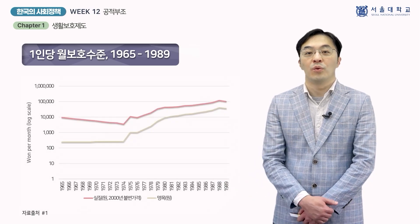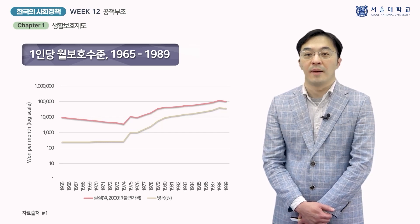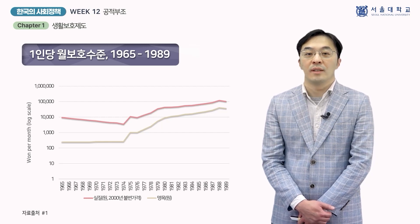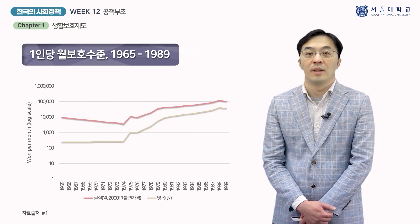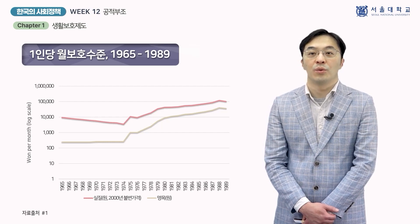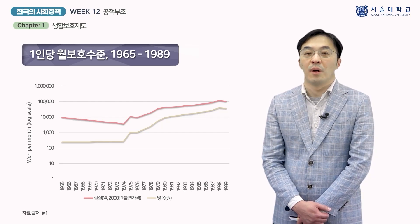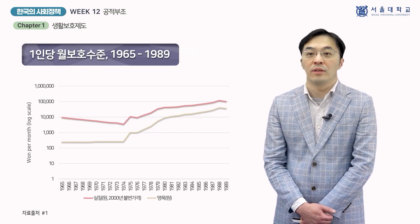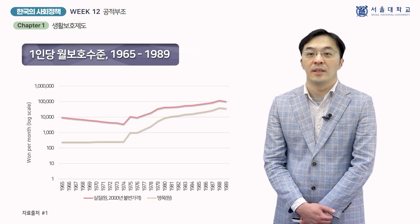그림은 1965년부터 1989년까지 생활보호 대상자의 1인당 월 보호 수준을 나타냅니다. 세로축은 로그 변환한 것이기 때문에 곡선의 기울기는 증가율을 의미하는 것으로 해석할 수 있습니다. 세로축 라벨은 명목은 원, 실질은 2020년 가격으로 조정한 원을 의미합니다. 점선을 보면 명목급여가 1965년부터 1974년까지 거의 고정되어 있었습니다. 하지만 1970년대는 스태그플레이션의 시기이므로 가치를 평가하려면 물가 상승을 반드시 조정해야 합니다.